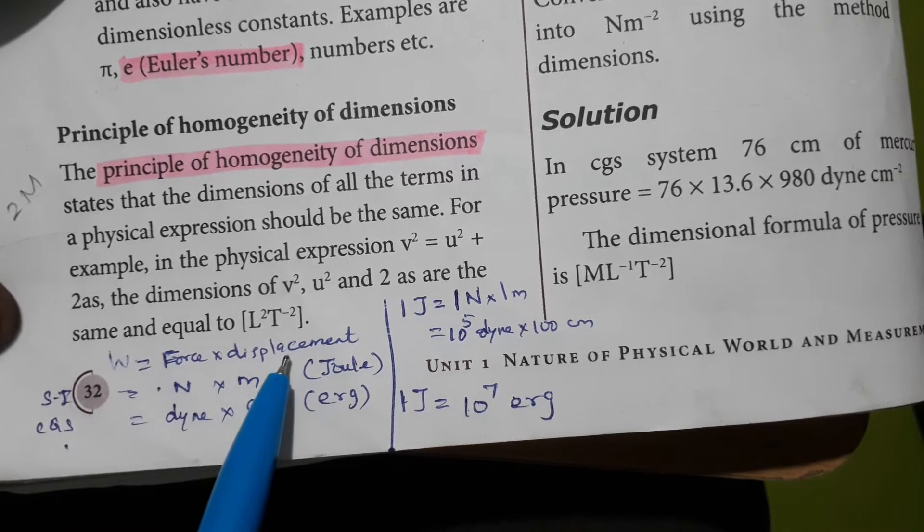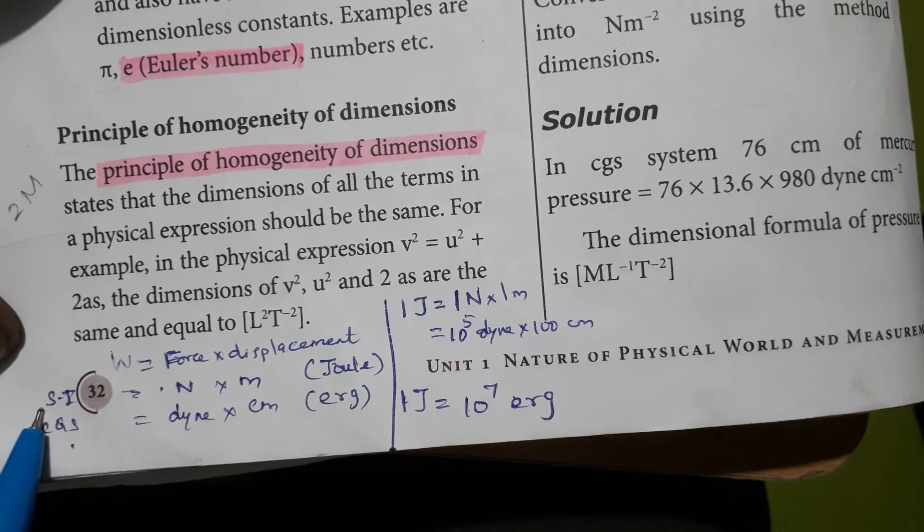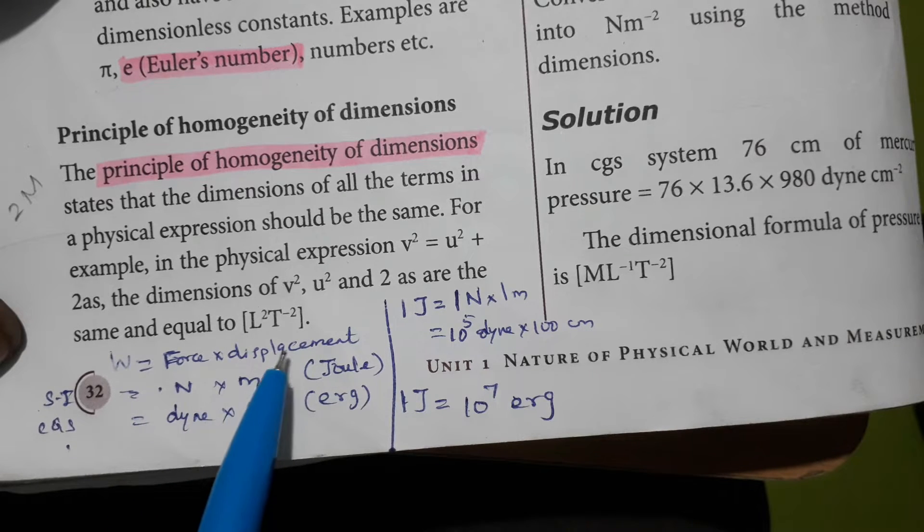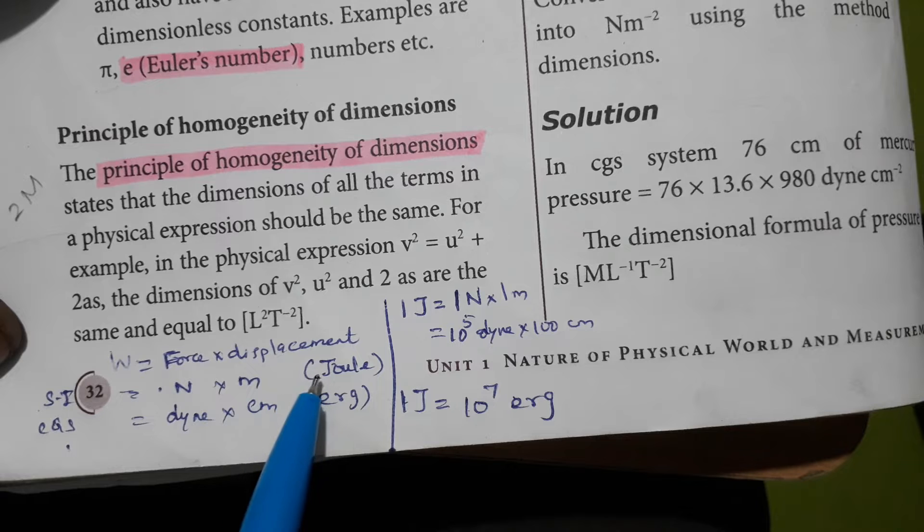We know that work done is equal to force into displacement. In SI units, the unit of force is Newton, the unit of displacement is meter, and the final unit for work done is Joule.